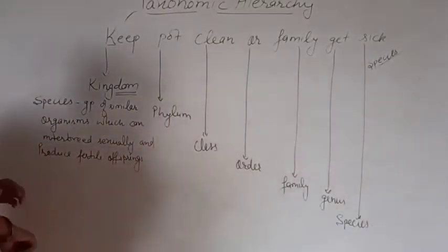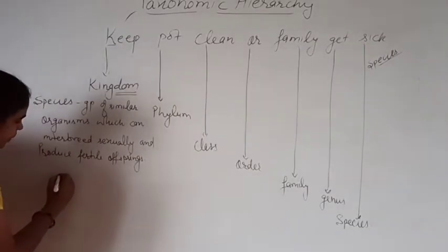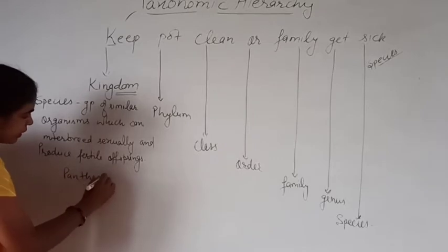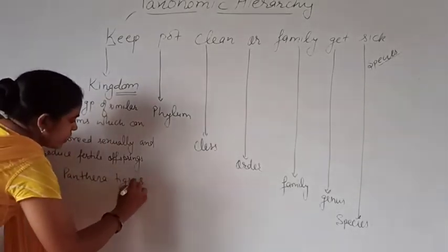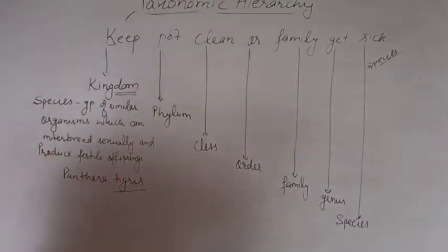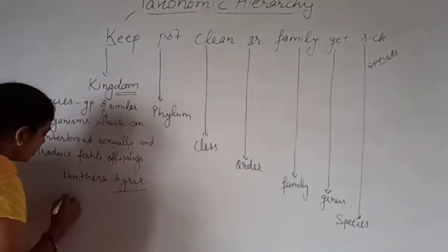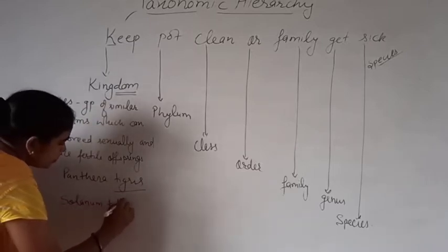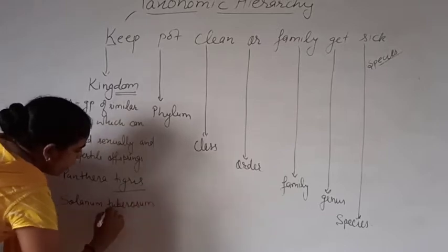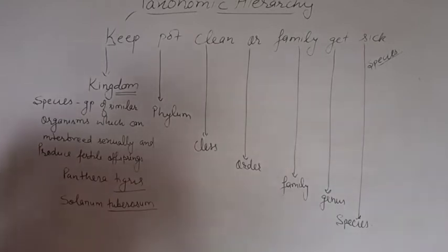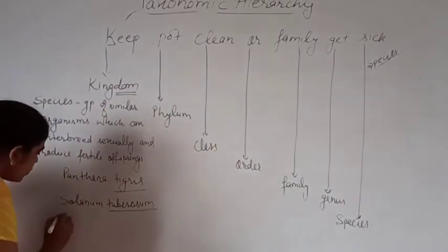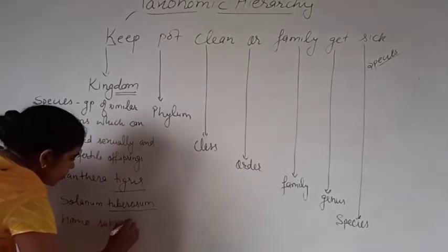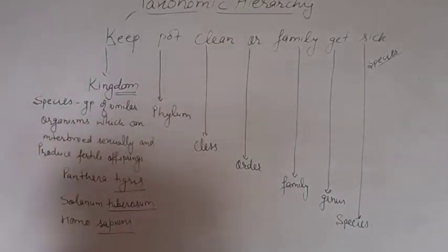For example, Panthera tigris — here 'tigris' is the species. Similarly, Solanum tuberosum — here 'tuberosum' is the species. And Homo sapiens — 'sapiens' is the species. All tigers can interbreed and produce fertile offspring.